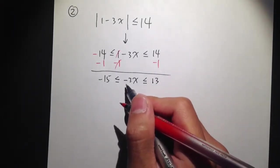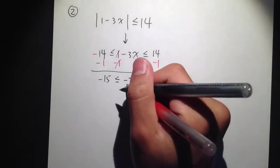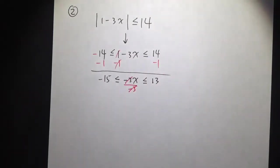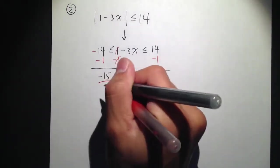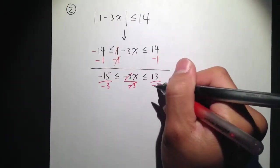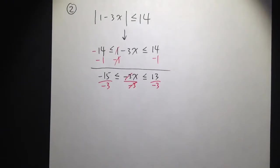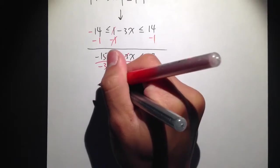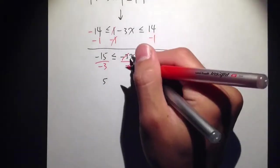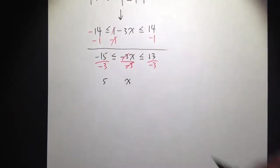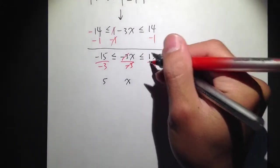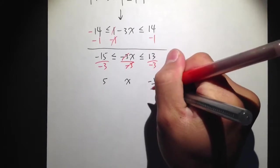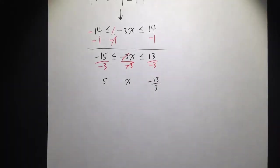I have negative 3 times x, so I need to divide by negative 3 to cancel. I will divide all three parts by negative 3. Negative 15 divided by negative 3 is positive 5. The middle part is just x. And 13 over negative 3 — we cannot simplify further, so just negative 13 over 3.